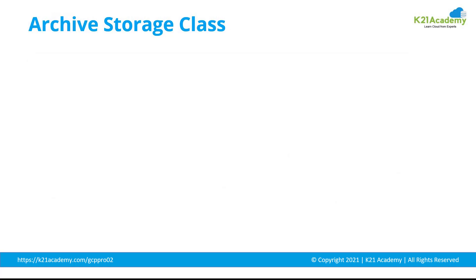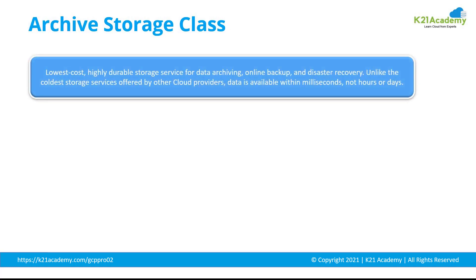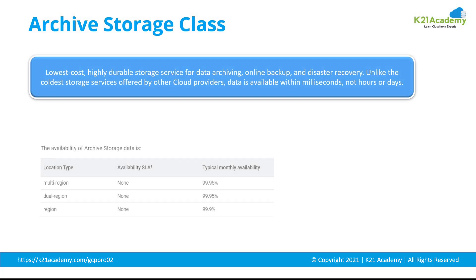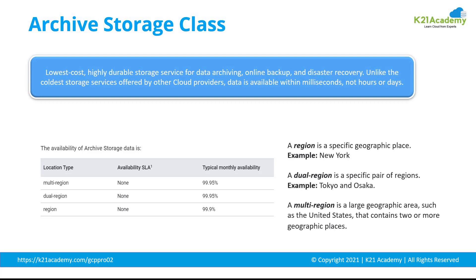Next up, we have archive storage class. Archive storage is the lowest cost, highly durable storage service for data archiving, online backup, and disaster recovery. Unlike the coldest storage services offered by other cloud providers, your data is available within milliseconds, not hours or days. Archive storage also has a higher cost for accessing the data and its operations.